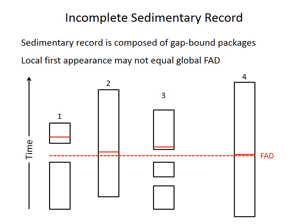Even if sampling is complete, the sedimentary record still contains many small breaks or gaps. They range from frequent and short gaps, such as between each bed in a shallow marine succession, to longer but less frequent gaps recognizable as unconformities. In the example sections below, there are gaps in sections 1 and 3 during the FAD of a particular species. As a result, the observed first appearance in those columns is separated even further from the actual FAD.